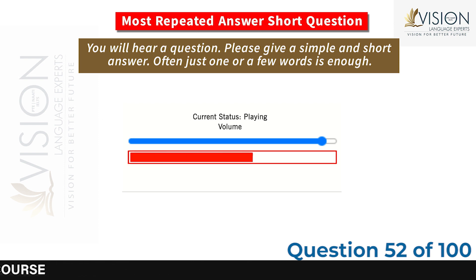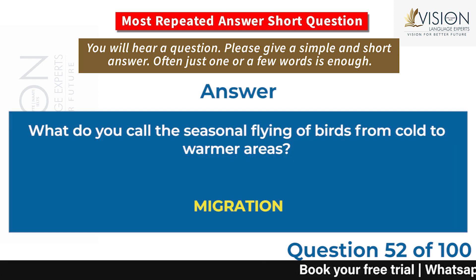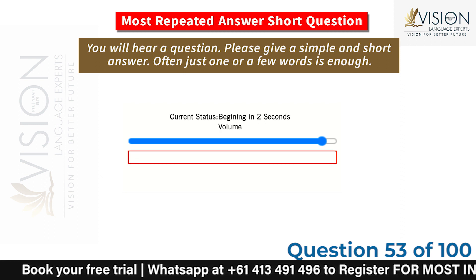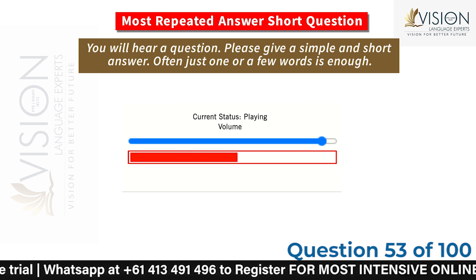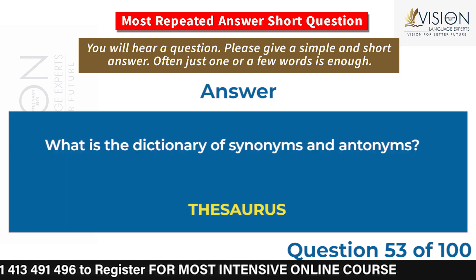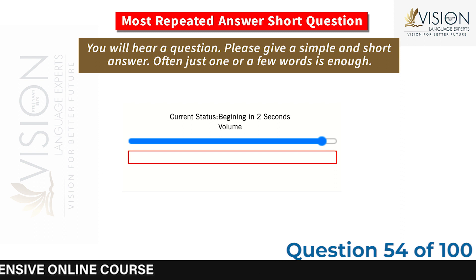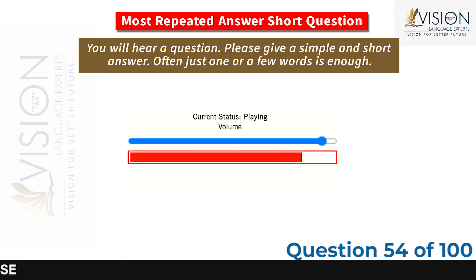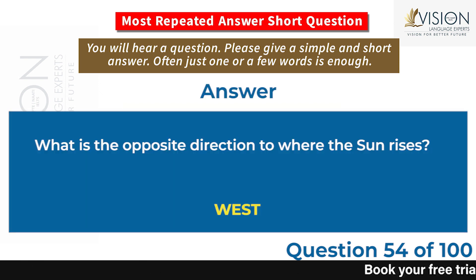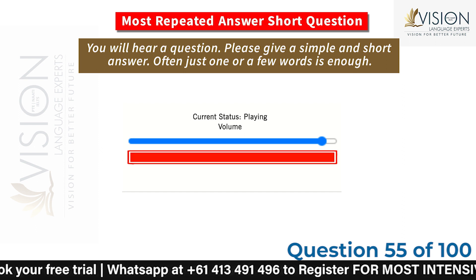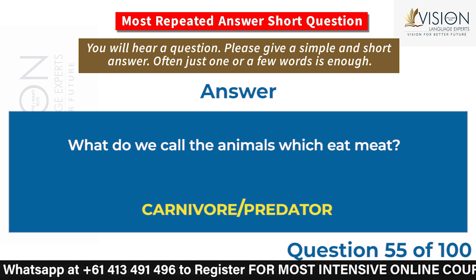What do you call the seasonal flying of birds from cold to warmer areas? Migration. What is the dictionary of synonyms and antonyms? Thesaurus. What is the opposite direction to where the sun rises? West. What do we call the animals which eat meat? Carnivore / predator.